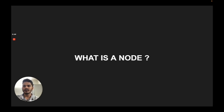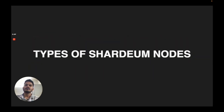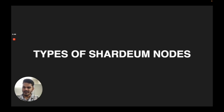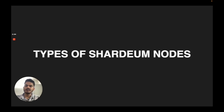There are three types of Shardium nodes: the first one is validator nodes, the second is archive nodes, and the third one is standby nodes. Let's go through each one of these.